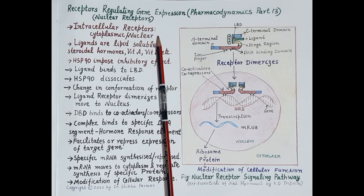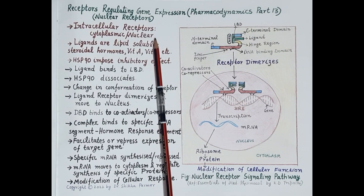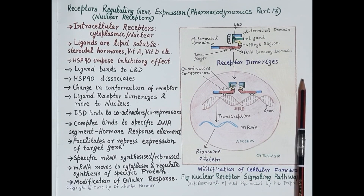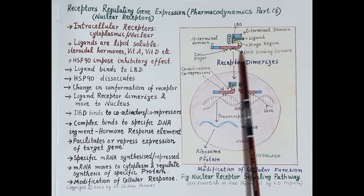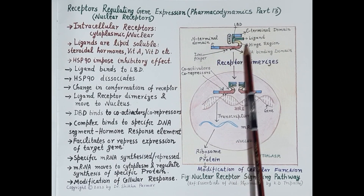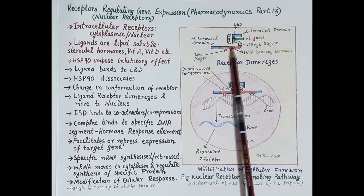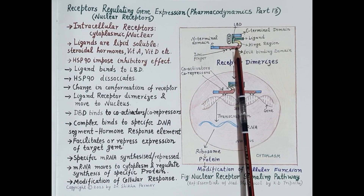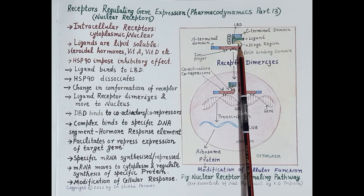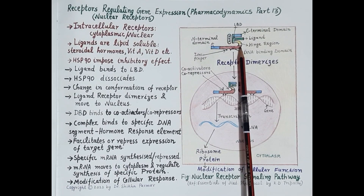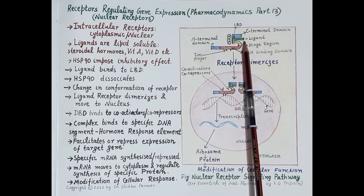These receptors are intracellular receptors — that means they are present either in the cytoplasm or in the nucleus. This receptor is present in the cytoplasm, so it is an intracellular receptor. It is not a cell surface receptor, it is not present on the surface of the cell, and it is not a transmembrane receptor.